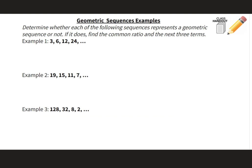Let's look at some examples. Determine whether each of the following sequences represents a geometric sequence. If it does, find the common ratio and the next three terms. Looking at the first one: 3, 6, 12, 24. One way to figure out the common ratio is to take the second term and divide it by the first term. So 6 divided by 3 equals 2. Then we check: 3 times 2 is 6, 6 times 2 is 12, 12 times 2 is 24. Since we have this common pattern of multiply by 2, it is geometric.